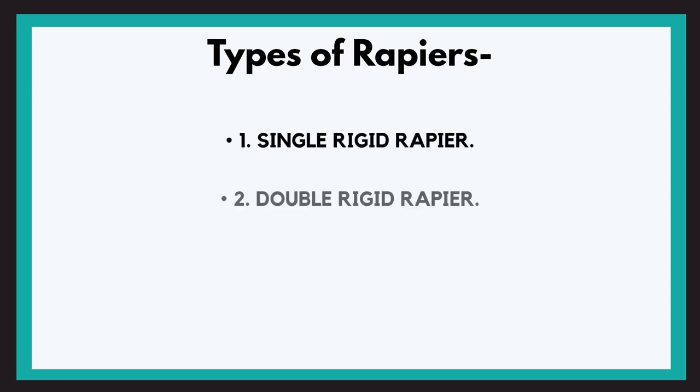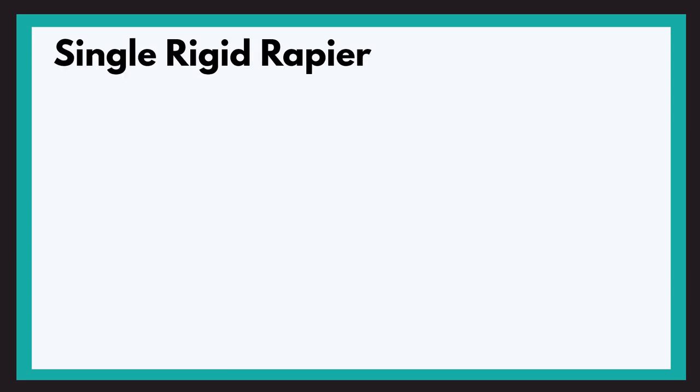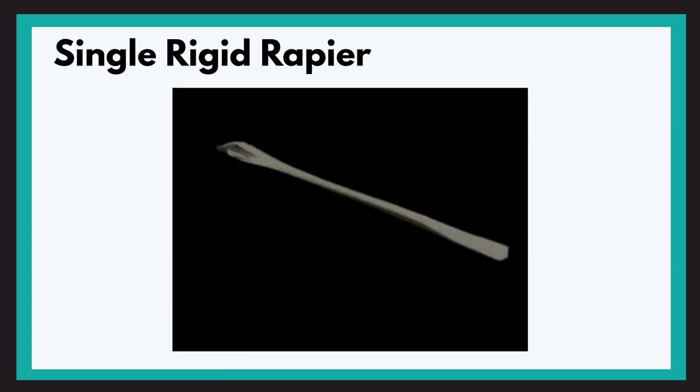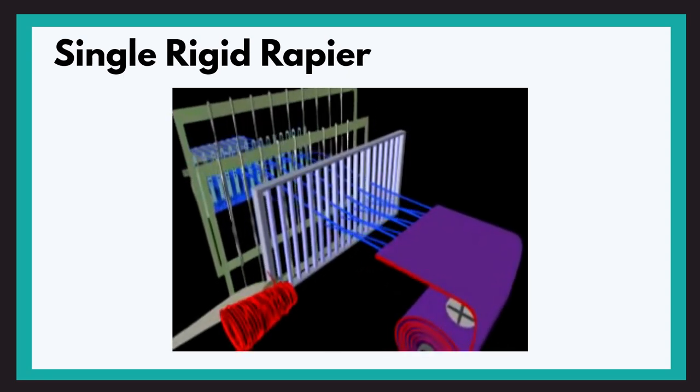The types of rapiers are single rigid, double rigid, double flexible and double telescopic. Let's start with single rigid. Now this is actually a solid composite rod-like material which carries the filling yarn from one end and passes it across the shed.